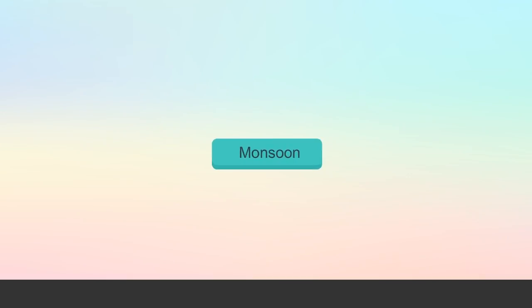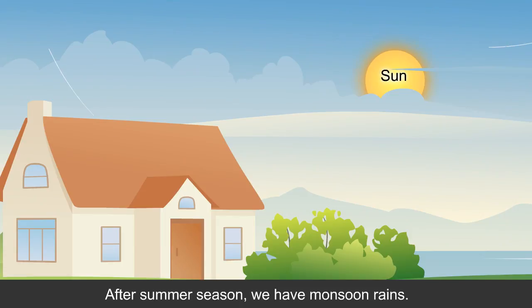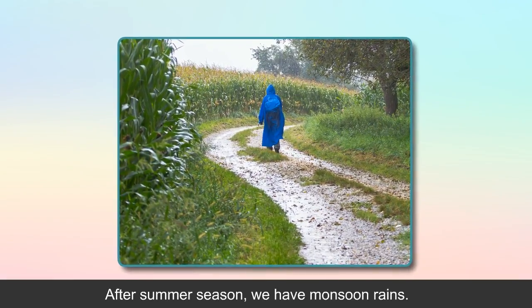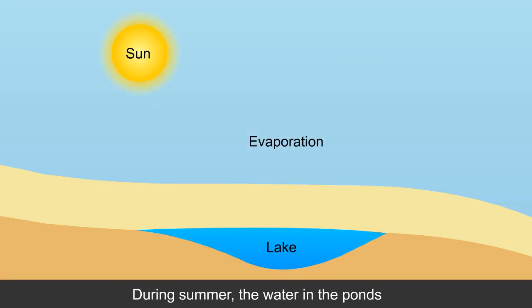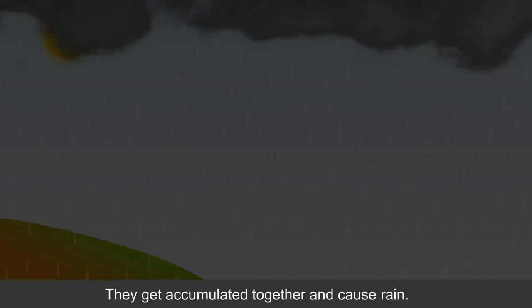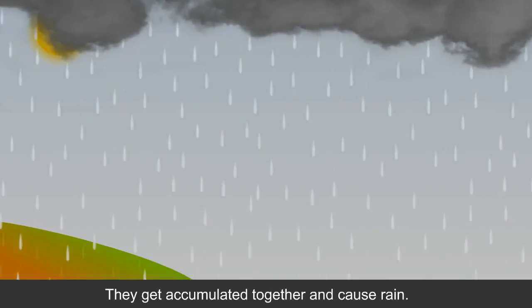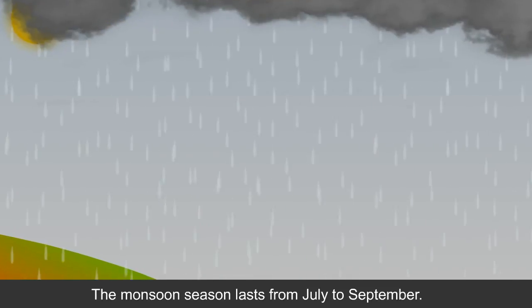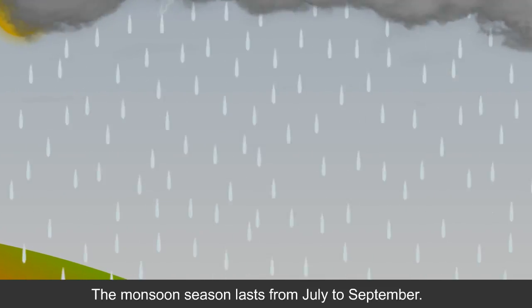Monsoon: After summer season, we have monsoon rains. During summer, the water in ponds and lakes goes up into the sky in the form of water vapour. They get accumulated together and cause rain. The monsoon season lasts from July to September.